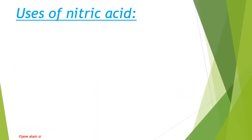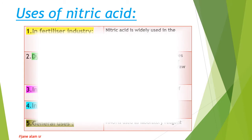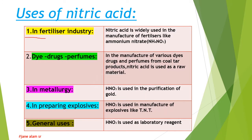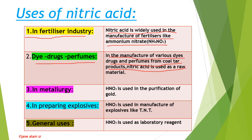Uses of Nitric Acid. Number 1: In the fertilizer industry, nitric acid is widely used in the manufacture of fertilizers like ammonium nitrate. Number 2: In the manufacture of various dyes, drugs, and perfumes from coal tar products, nitric acid is used as a raw material.